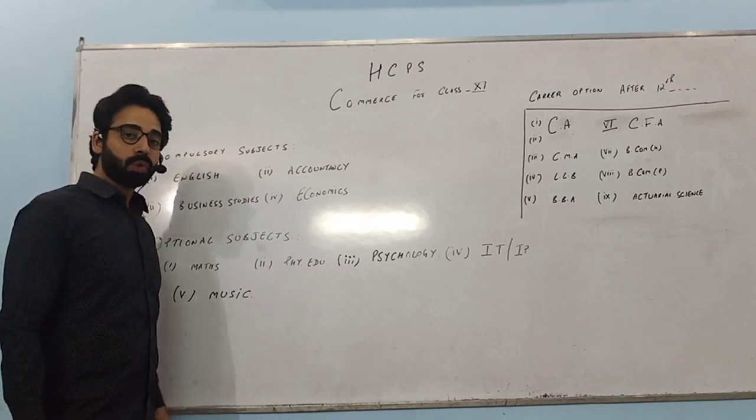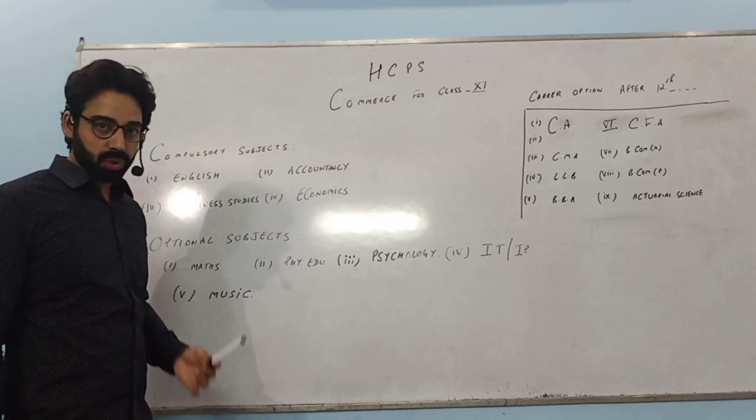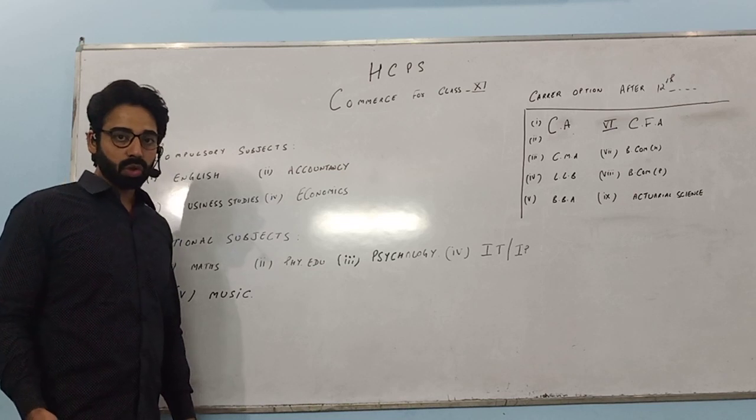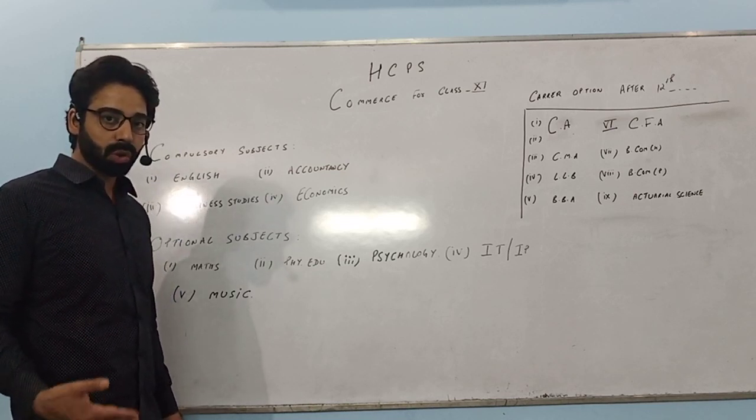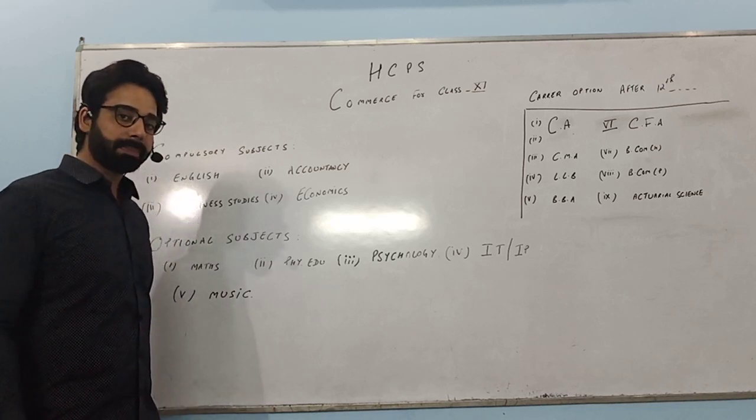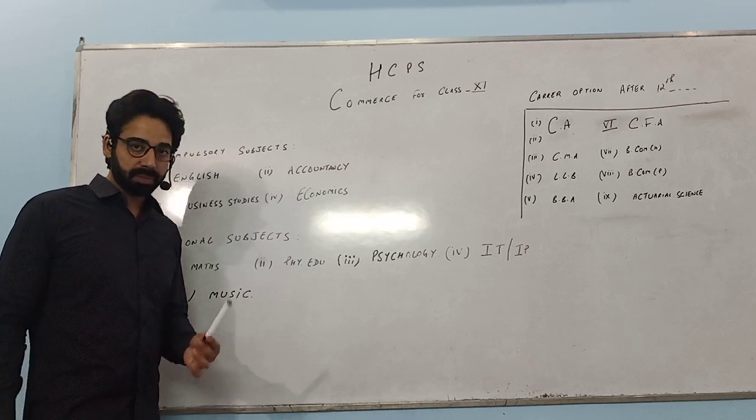Plus, if you choose two subjects, then you will have an additional subject. CBSE says that minimum 5 subjects and maximum 6 subjects for 11th and 12th. So minimum 5, maximum 6. This is your choice if you choose six subjects or five subjects.